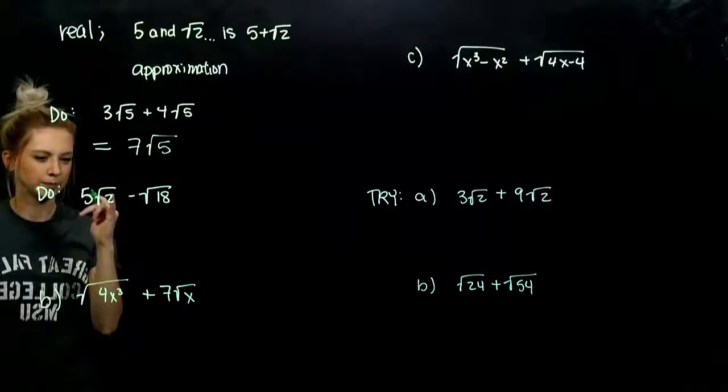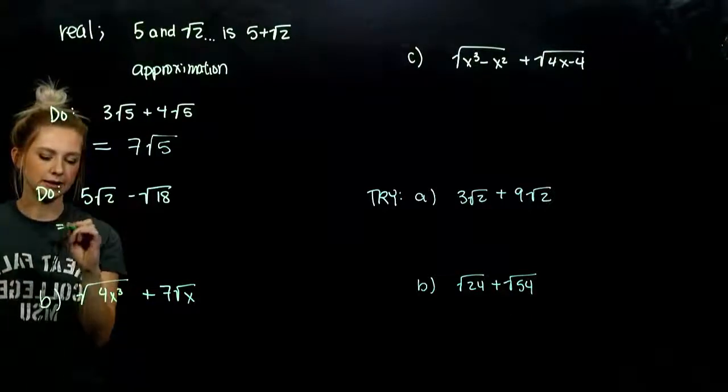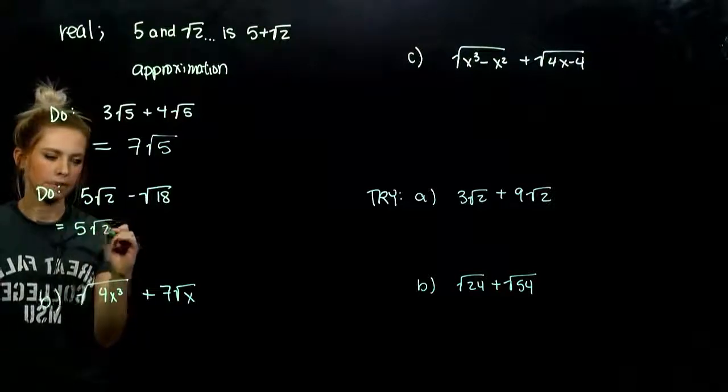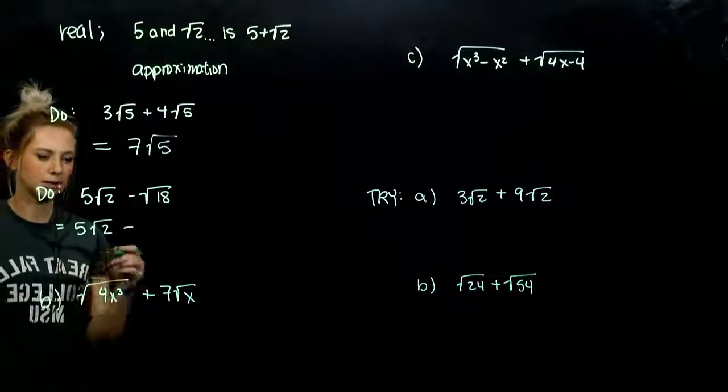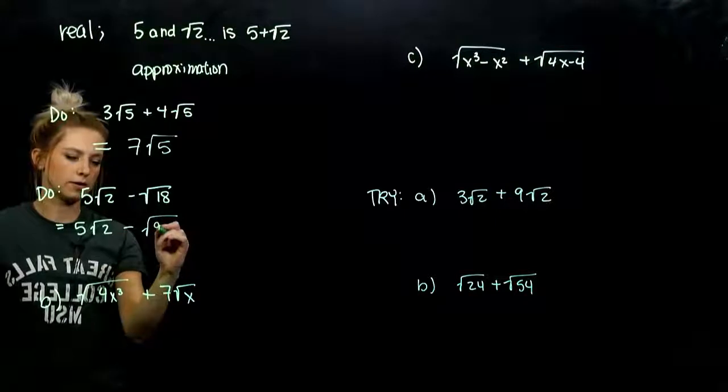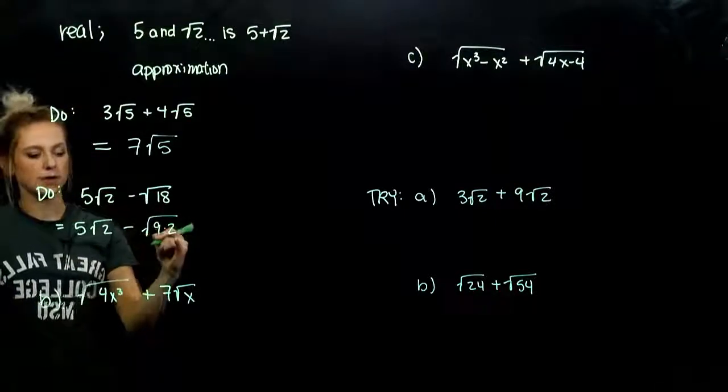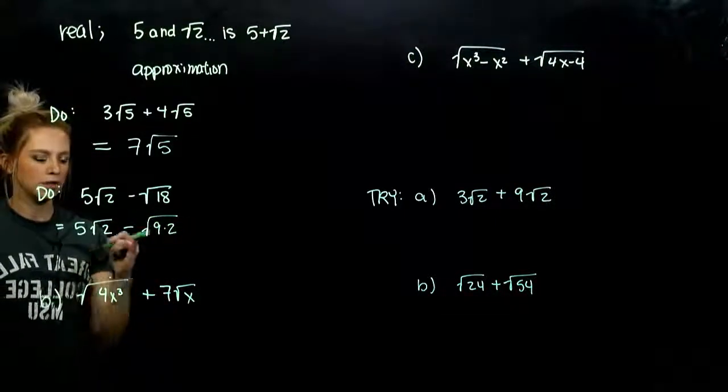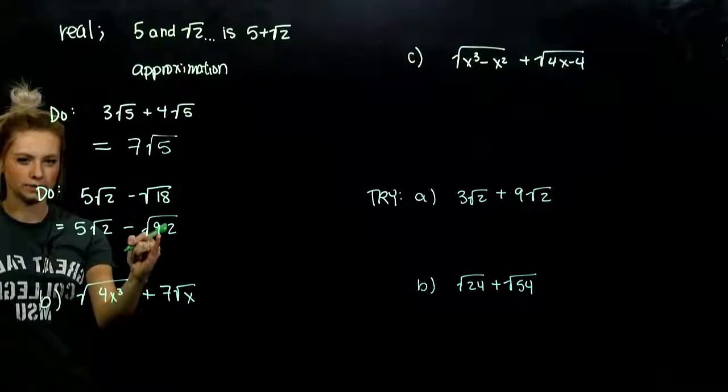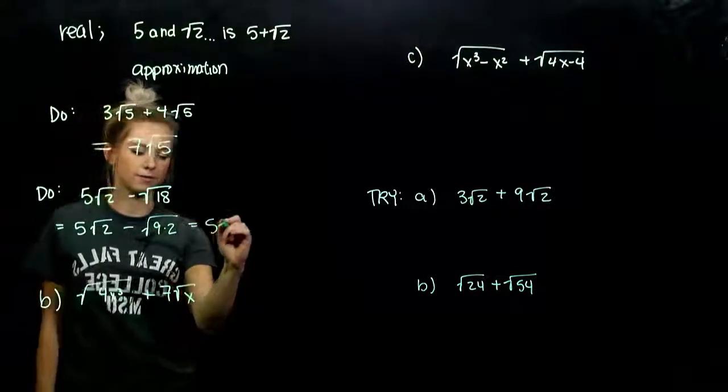So that first example. Root 2 I can't break down any farther. But root 18 can be written as the square root of 9 and 2. Perfect square and something else. So what evaluates out of here? We have 5 root 2.